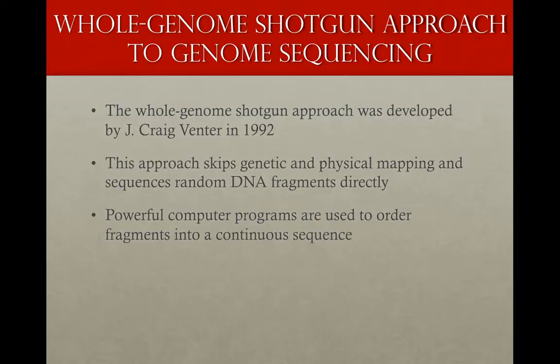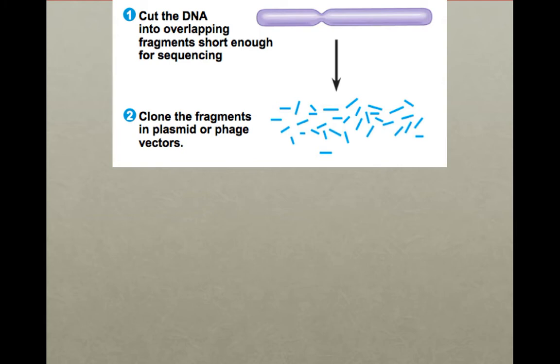Celera Genomics used the whole genome shotgun method, which basically skips the linkage mapping and physical mapping steps of the first method. First, they copy DNA and cut it into overlapping fragments. Then the fragments are cloned. They sequence the fragments, and they use computers to put the sequences in order. This approach is widely used now.